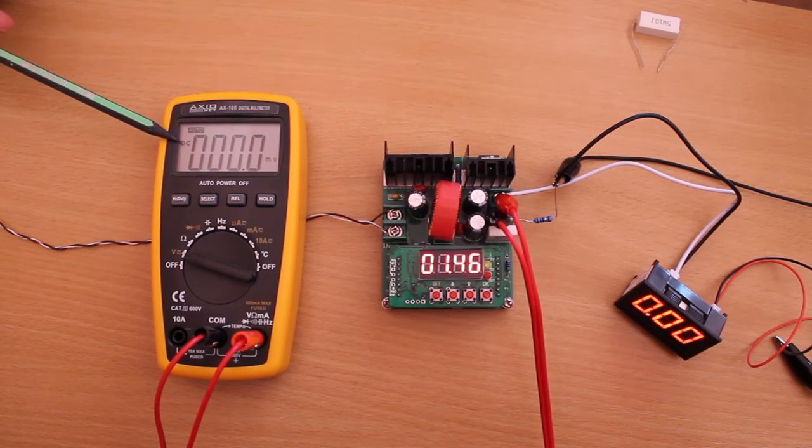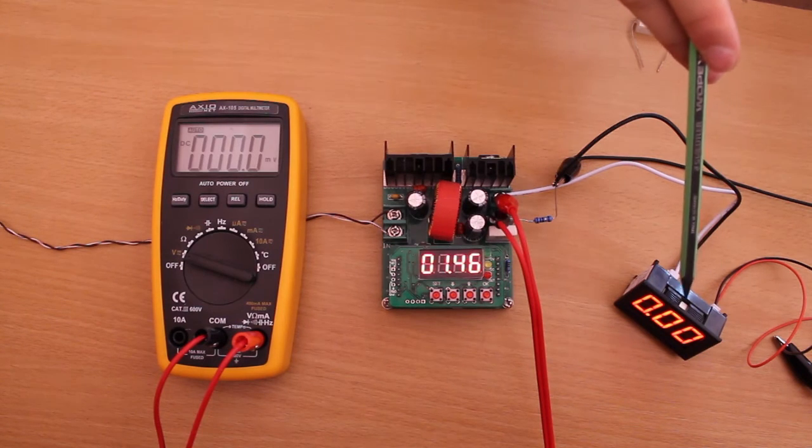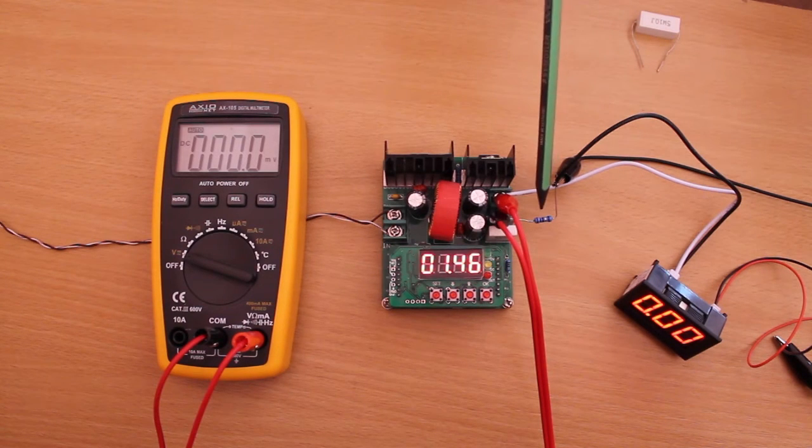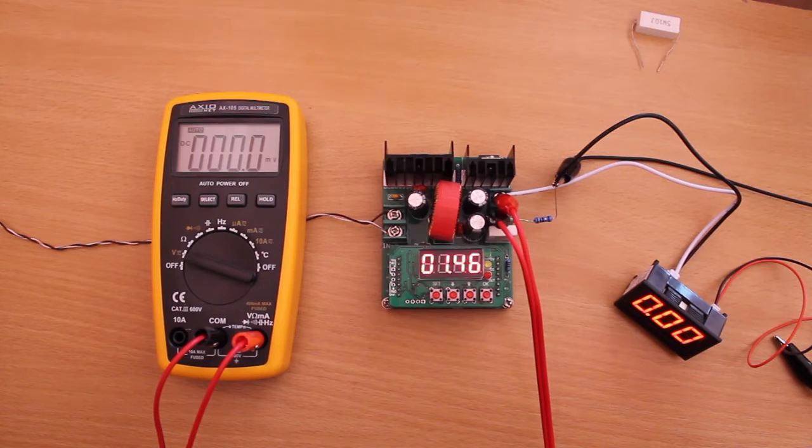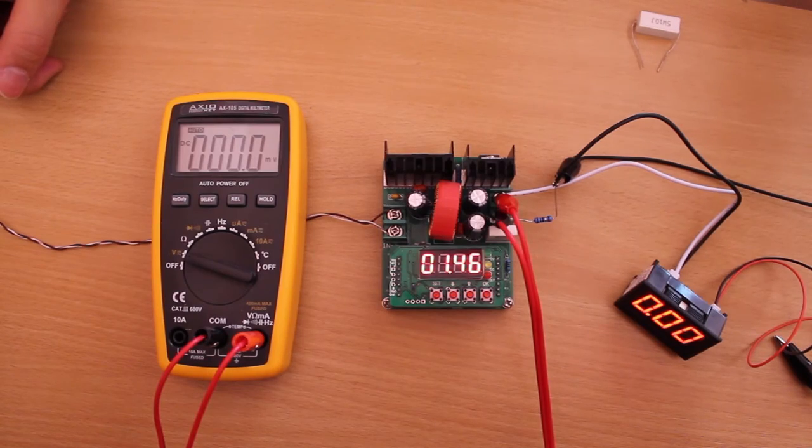This is a voltmeter connected directly to the output and this is an ammeter connected through a 10 ohm resistor. Let's set the buck converter to output 2.5V and half an amp.